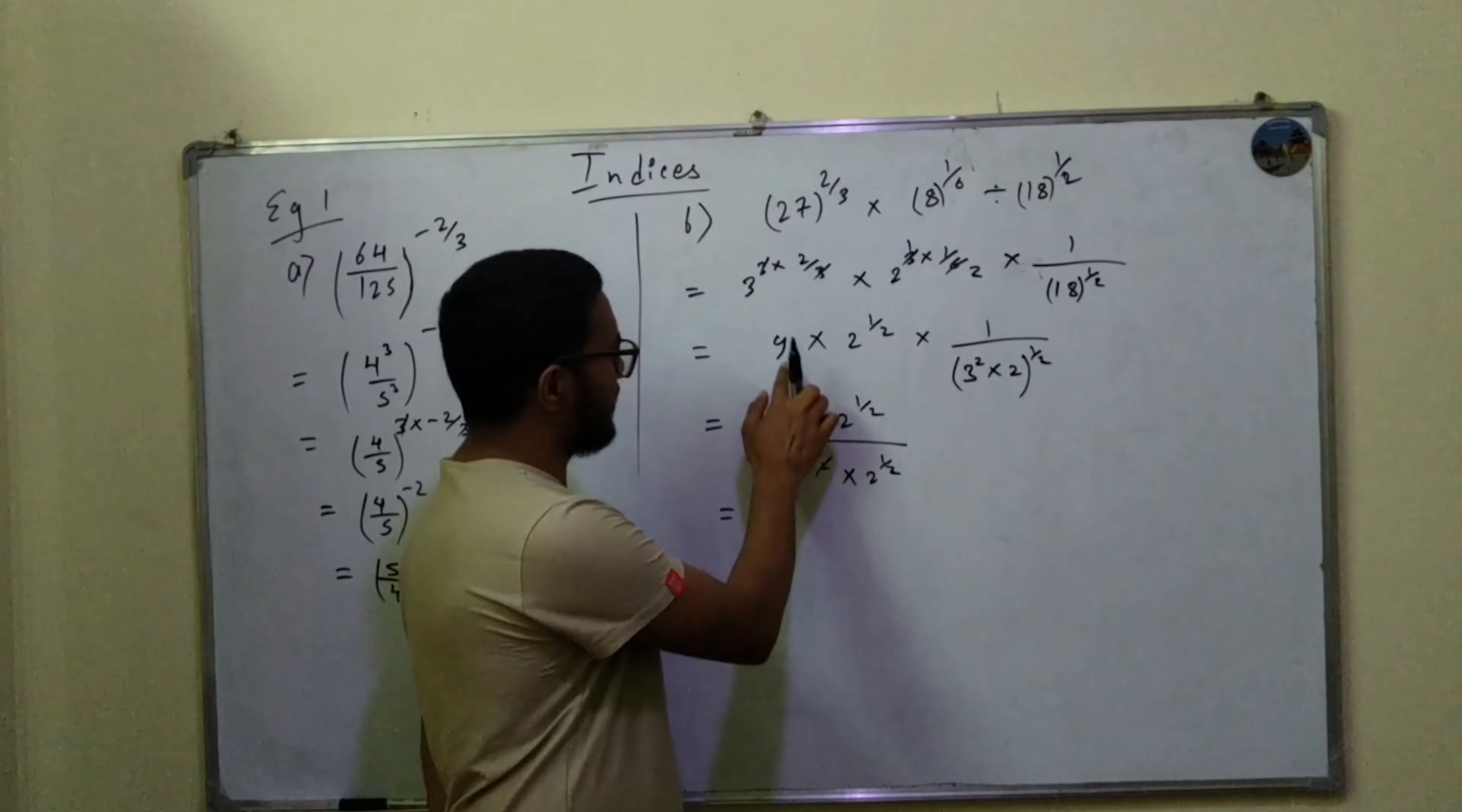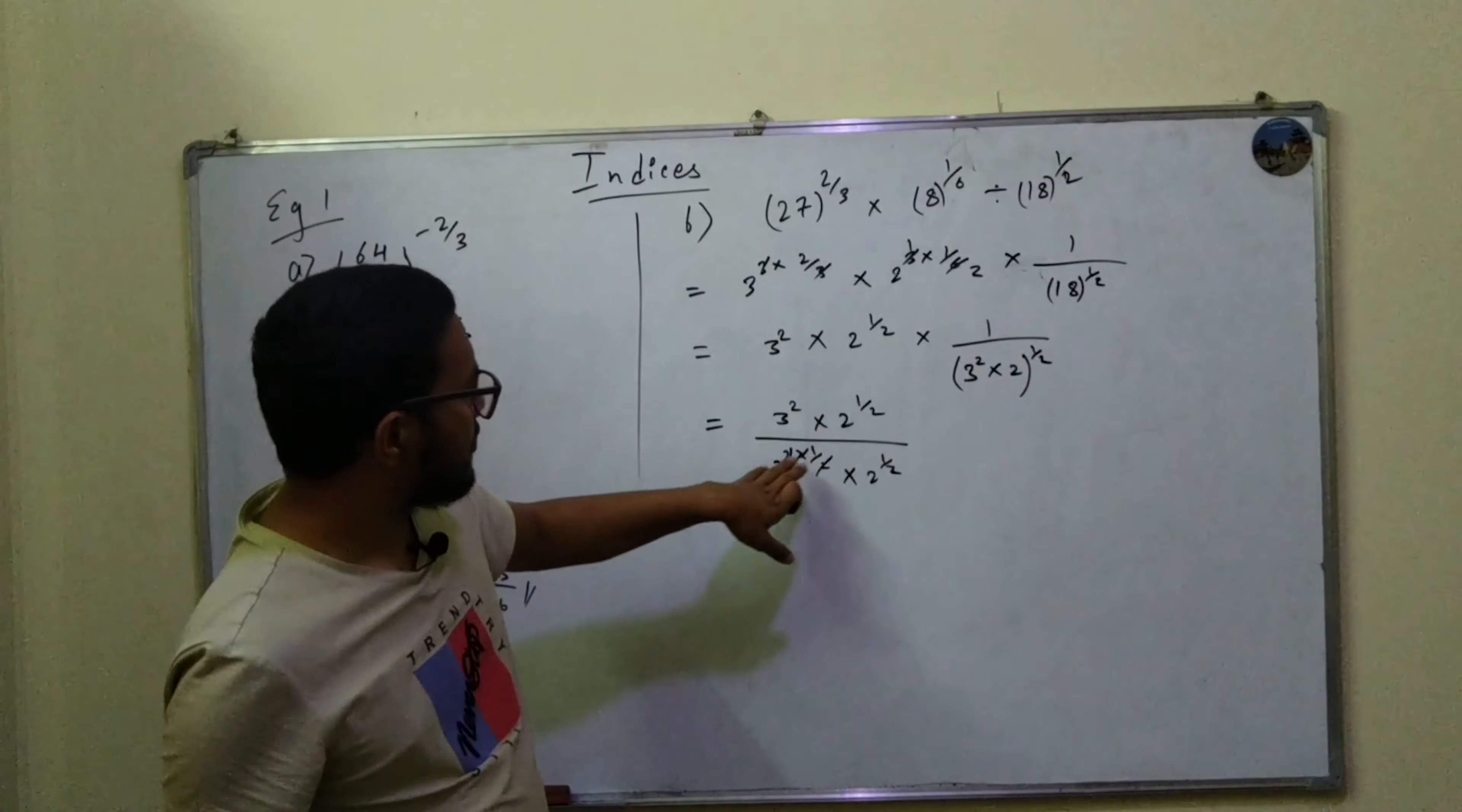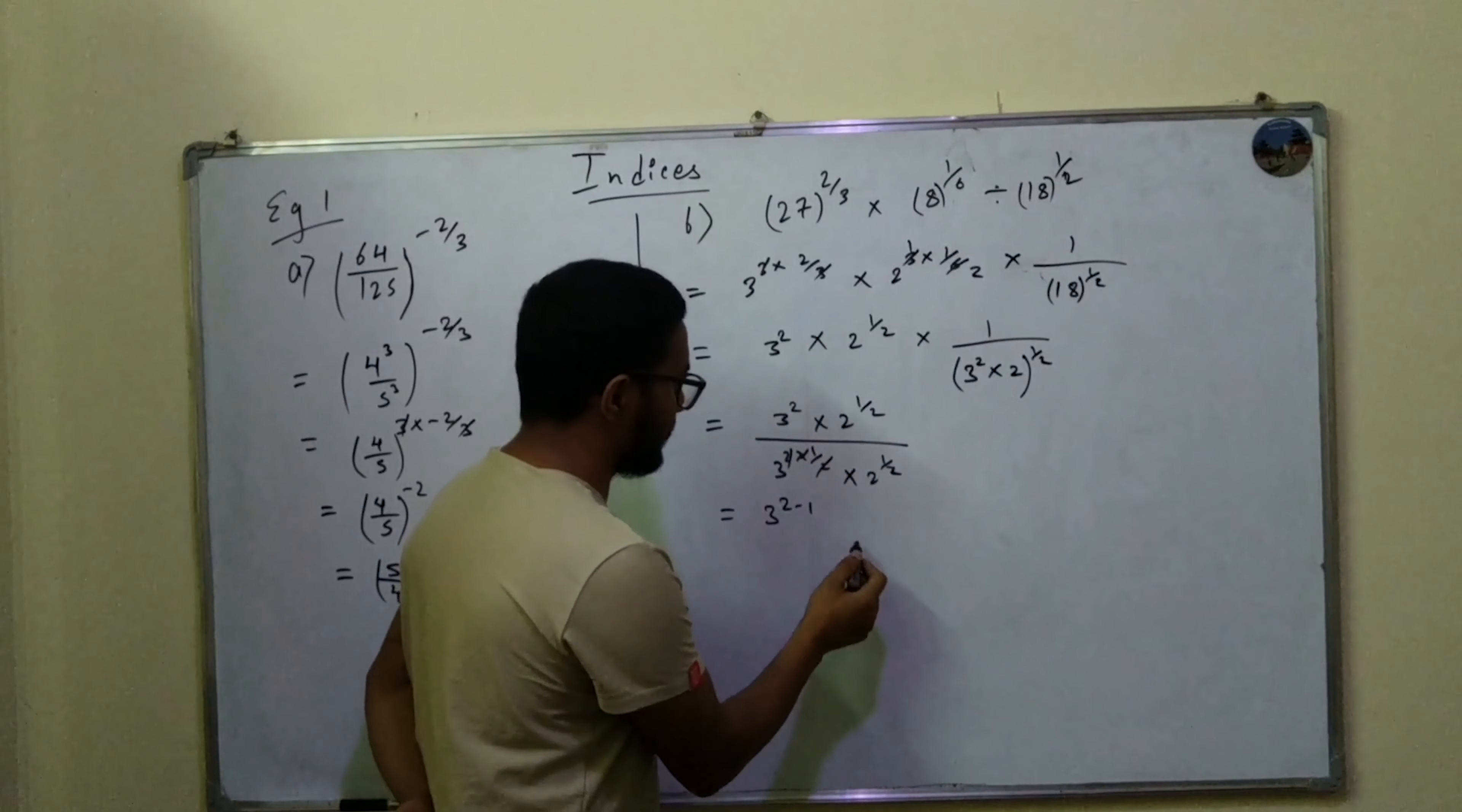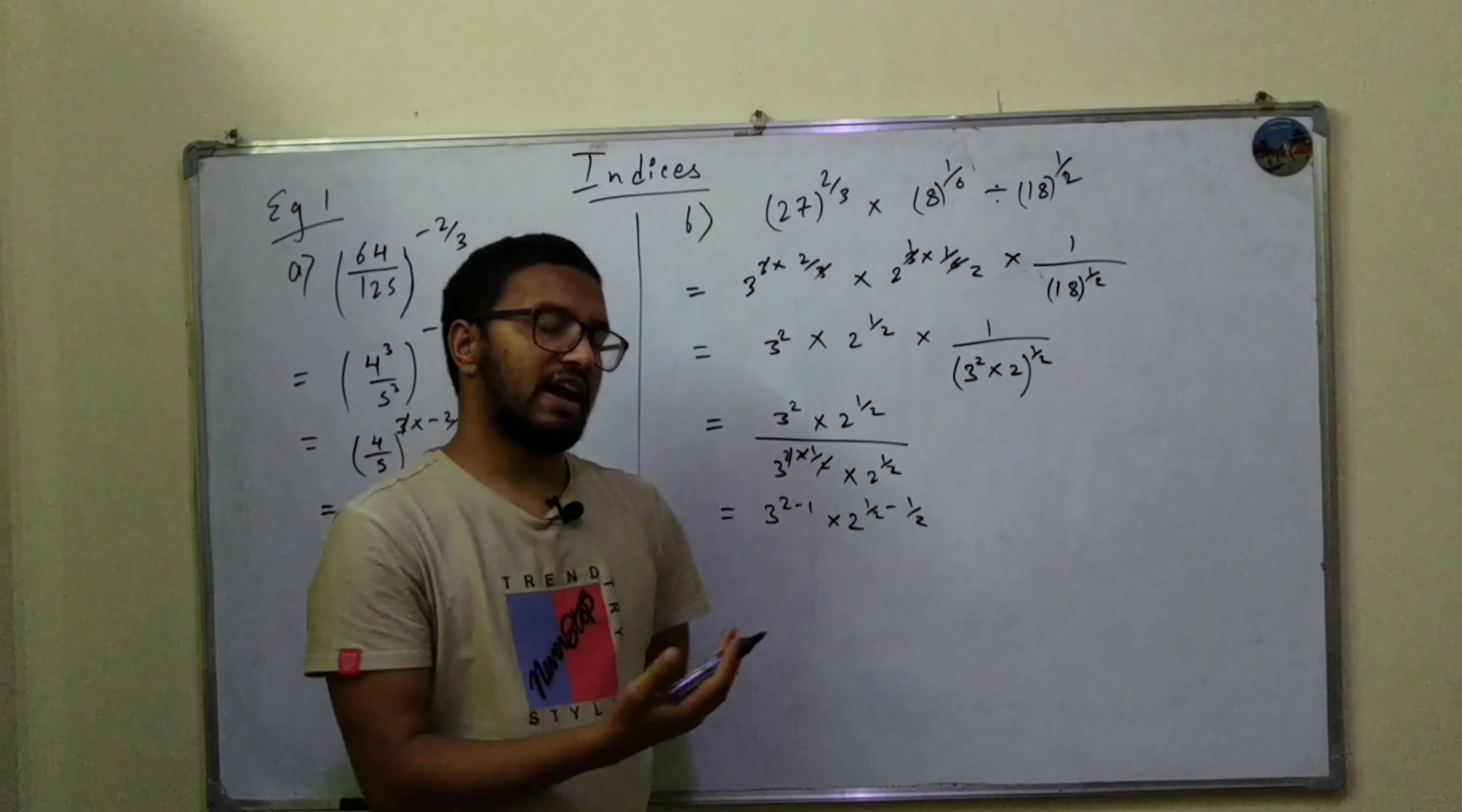After that, 3 squared. If I take this 3 to the power 1 to the upper side it will be negative as per division rule, so 3^(2-1) times 2^(1/2) times 1/2. When taking back, the fraction will be subtracted from another fraction.